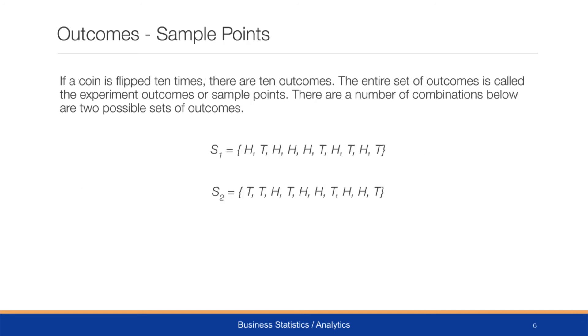If a coin is flipped 10 times, then there are 10 outcomes. The entire set of outcomes is called the experiment outcomes or sample points. Below shows a number of combinations of two possible sets of outcomes — for example, one sample might be H, T, H, H, H, T, H, T, H, T, and another sample T, T, H, T, H, T, H, T, H, T. These are two different sets of outcomes denoted by their appropriate sample space.